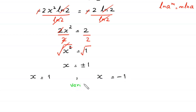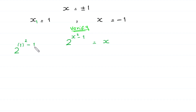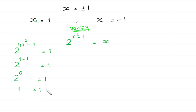Now let us verify these values of x to see whether they are solutions or not. We put these values in the original equation: 2 to the power x squared minus 1 equals x. First, putting x equals 1: 2 to the power 1 squared minus 1 equals 1, so 2 to the power 1 minus 1, which is 2 to the power 0, equals 1. Since 1 equals 1, the left-hand side equals the right-hand side, so x equals 1 is a valid solution.